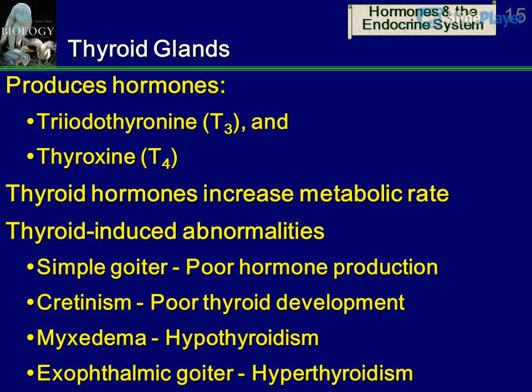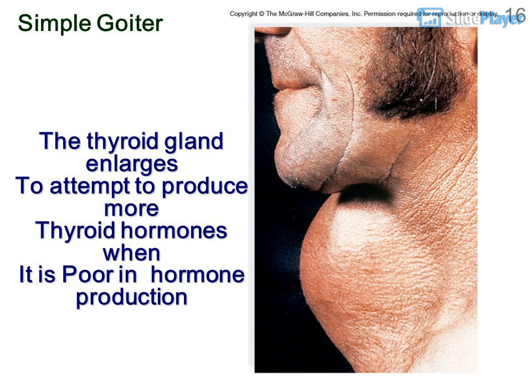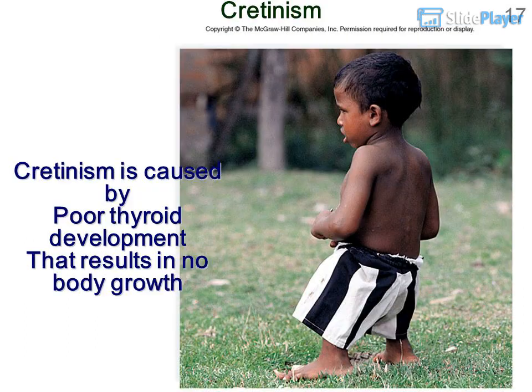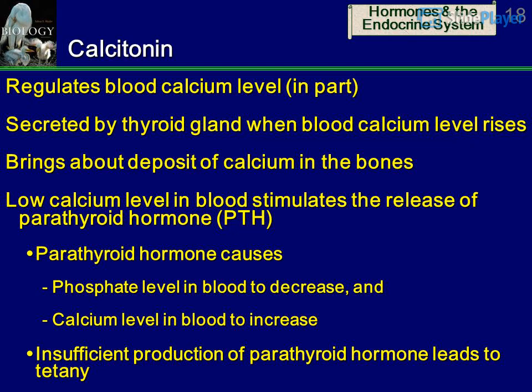Thyroid Hormones: The thyroid gland produces Triiodothyronine (T3) and Thyroxine (T4), which increase metabolic rate. Thyroid-induced abnormalities include: simple goiter — the thyroid gland enlarges to attempt to produce more thyroid hormones when hormone production is poor; Cretinism — caused by poor thyroid development resulting in no body growth; Myxedema — hypothyroidism; and Exophthalmic goiter — hyperthyroidism. Calcitonin, secreted by the thyroid gland when blood calcium level rises, helps regulate blood calcium level in part.